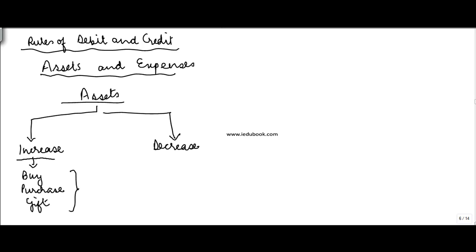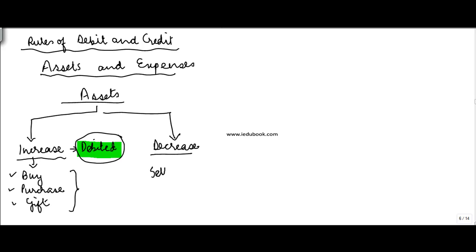When I say 'you' I mean in business. So whenever there is an increase in the asset — whether it is because of purchase, you buy it, you gift it — the increase in an asset is always debited. And a decrease in an asset, which could be because of a sale, gifting to someone, or an asset being destroyed — in all these cases, the decrease is always credited.